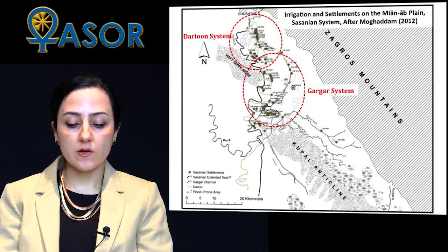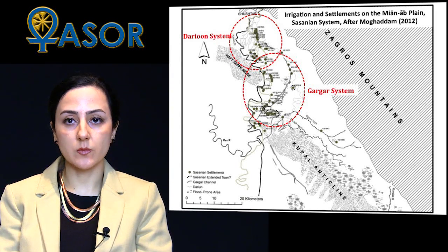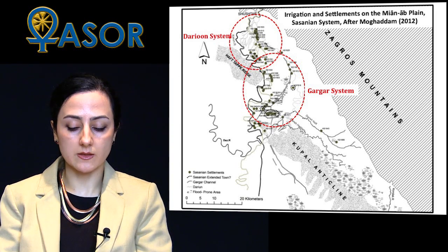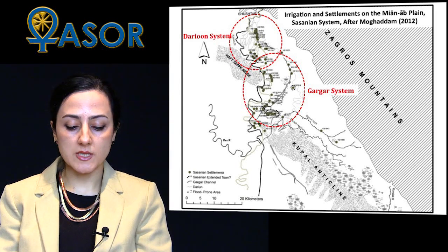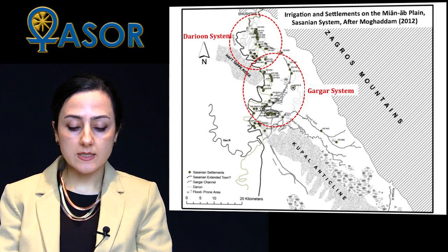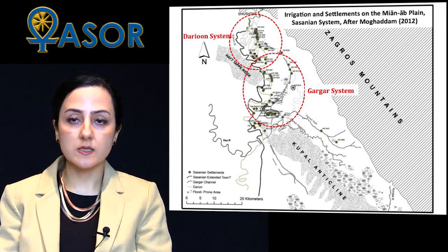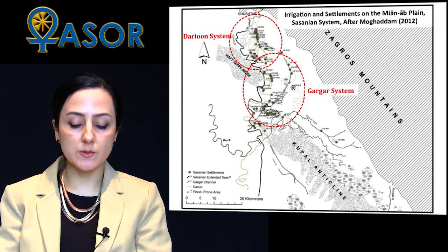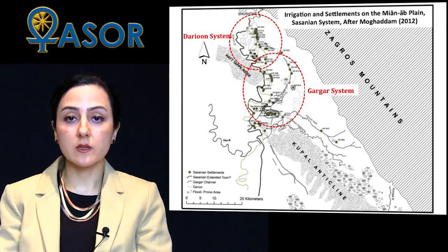Mugadam argued that the present Gargar River was formed when the Sassanian irrigation system fell into disrepair after the Muslim conquest, perhaps following an avulsion event. Having agreed with the existence of two systems and the relative sequence of their development, I found the evidence from settlement distribution inconclusive to prove that the Gargar system was a one-time project built in the Sassanian period, or that the Gargar River formed as a result of lack of investment in the post-Islamic period. Could we explore that independent of site associations?